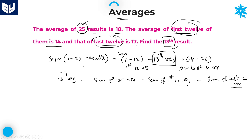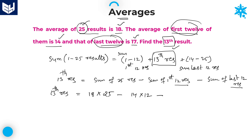That is the process of doing these kind of problems. The 13th result is equal to — it is very easy to calculate. Sum is nothing but average multiplied by number of observations. The number of observations are 25 and the average of 25 results is 18, so 18 into 25. Minus — the average for first 12 results is given as 14. Average is 14, and the number of observations are 12. Minus — the average of last 12 is given as 17, so 17 into 12, with number of results 12.